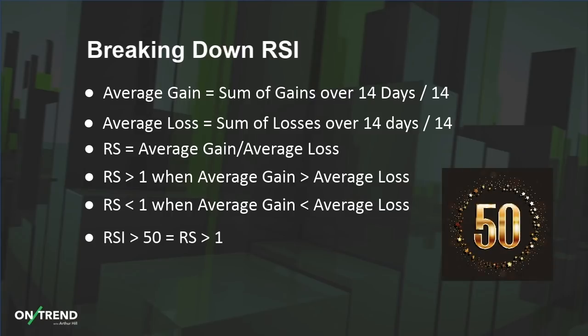When you translate that to RSI: when RSI is above 50, RS is above one; when RSI is below 50, RS is below one. So when RSI is above 50, prices are moving higher — that's a key level. And when RSI is below 50, prices are moving lower in general.